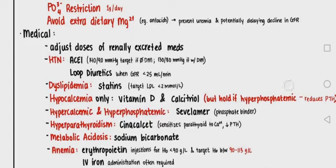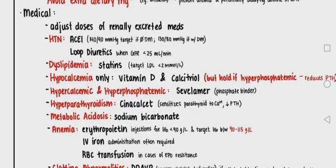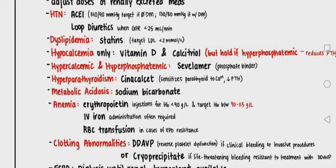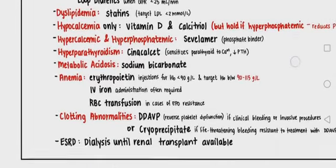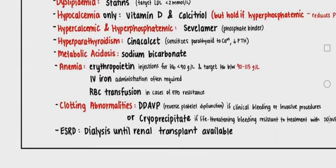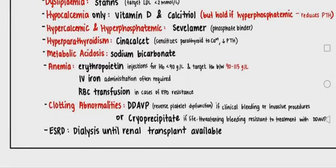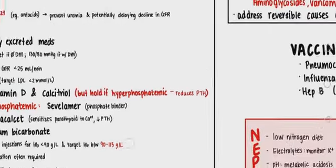Medical management also includes vitamin D and calcitriol for hypocalcemia, sevelamer for hypercalcemic and hyperphosphatemic patients, cinacalcet for hyperparathyroidism, sodium bicarbonate for metabolic acidosis, and erythropoietin, IV iron, and RBC transfusion for anemia. For clotting abnormalities, cryoprecipitate is given. Dialysis is used until renal transplant is available in end-stage renal disease.